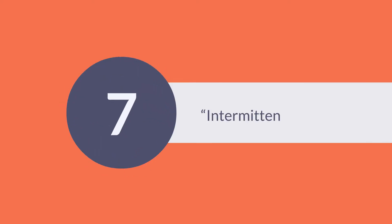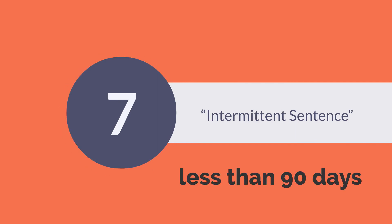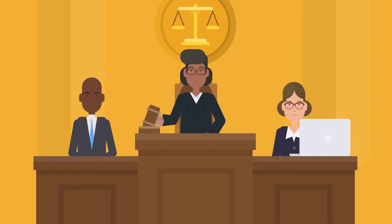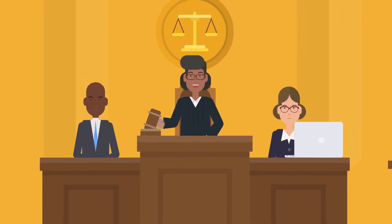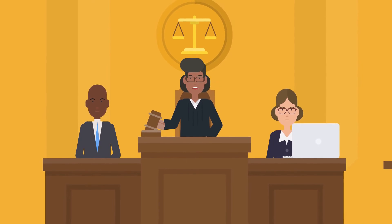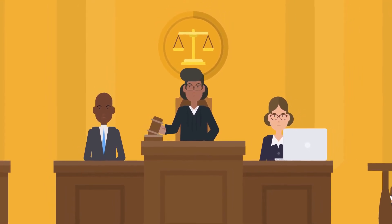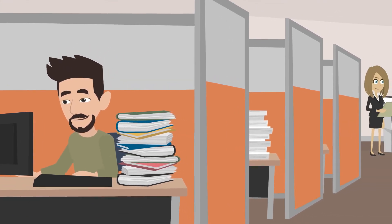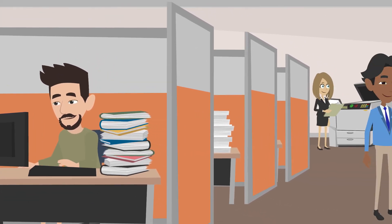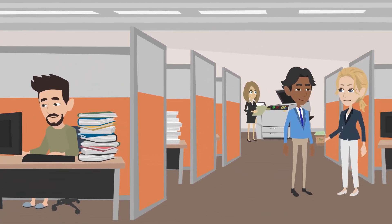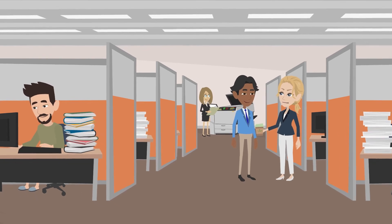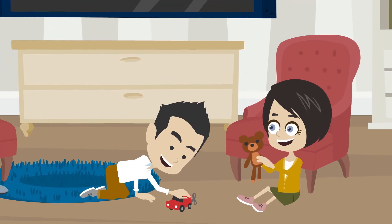The seventh type of punishment is an intermittent sentence. This is where a sentence is less than 90 days and the court may order it to be served in blocks of time, such as only on the weekends. This sentence will always be accompanied by a probation order for when you are not in jail. An intermittent sentence is only considered when your lawyer can persuade the judge that you have responsibilities that make it hard to serve a regular sentence, such as a job or child care.